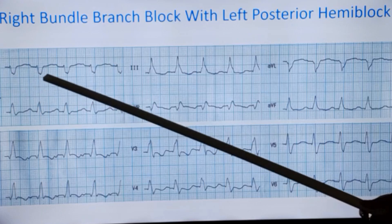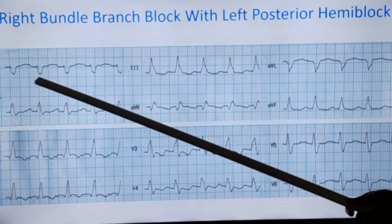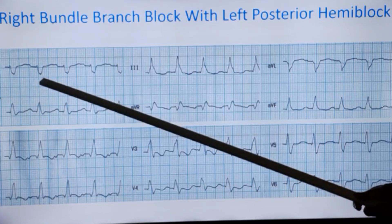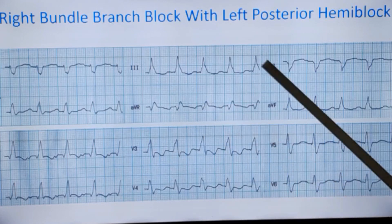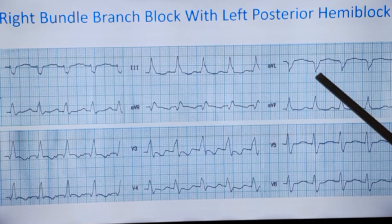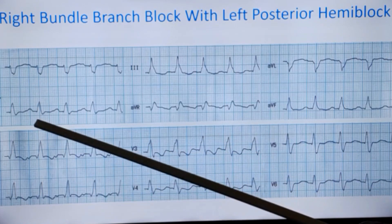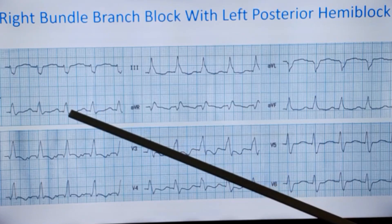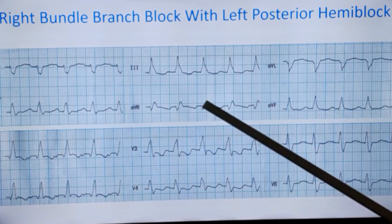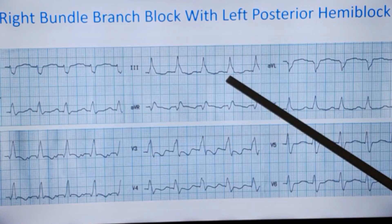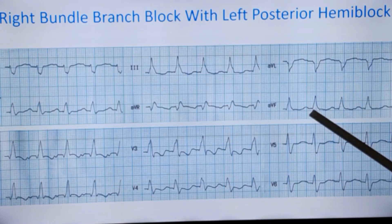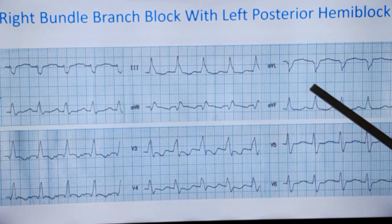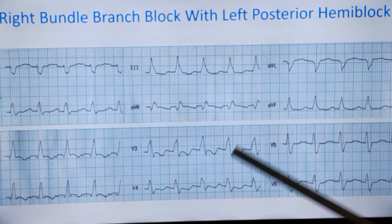Coming back to the pattern here. You can see a small R wave followed by a wide slurred S wave in lead 1, and the same pattern can also be seen almost in AVL, but in AVL that small R wave is very much diminutive. Then in inferior leads, you can see that there is a minimal Q wave followed by a tall slurred R wave in lead 2. Lead 3 also shows a similar pattern. AVF also shows a minimal Q wave followed by a tall slurred R wave, indicating extensive damage to the conduction system.